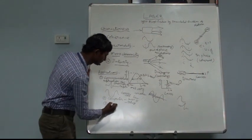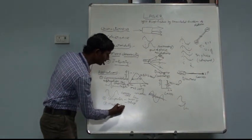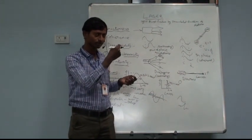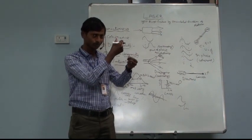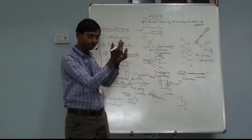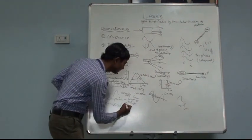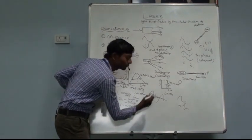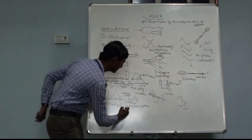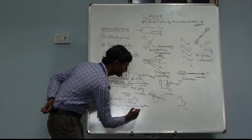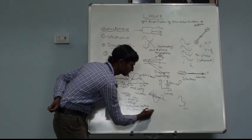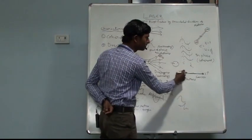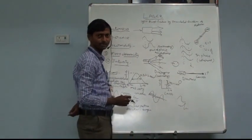Coming to the medical field: in the treatment of eye retina, as aging occurs the retina becomes detached, and laser light is used to reattach it. Laser is frequently used in the treatment of detached retina. Also, for high precision surgeries such as brain surgery, the surgeon needs to reach a very small area, which can be easily reached with the help of the directionality property of laser light.